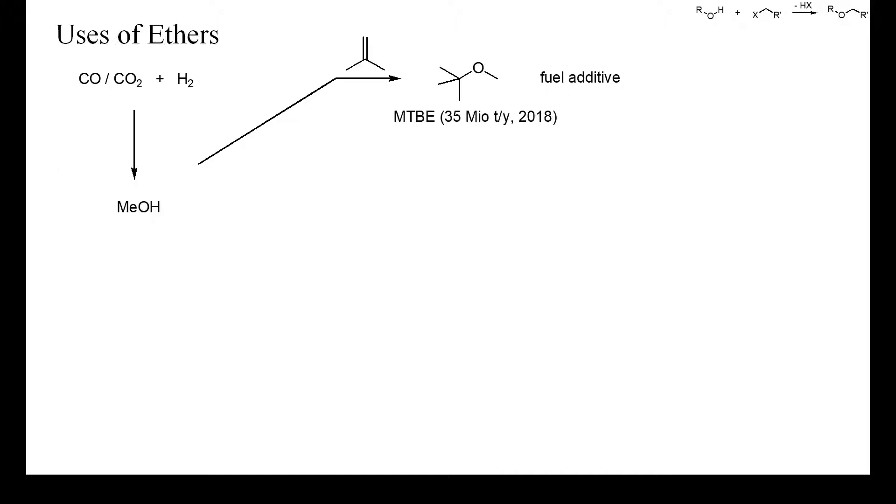So what are ethers used for? One important ether is MTBE, which is used as solvent and as fuel additive to increase knock resistance. This ether is prepared by the acid-catalyzed addition of methanol to isobutene. Methanol is prepared from carbon oxides and isobutene is a by-product of the thermal cracking of hydrocarbons.